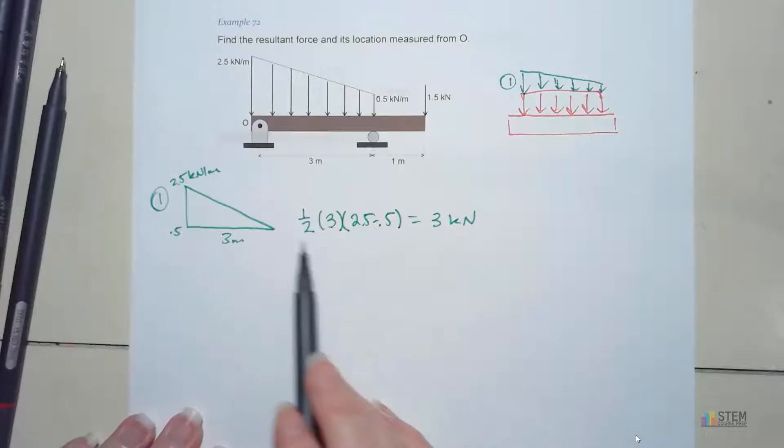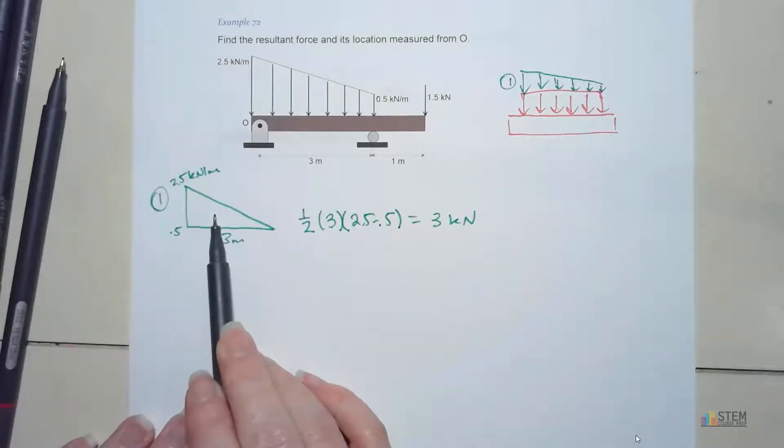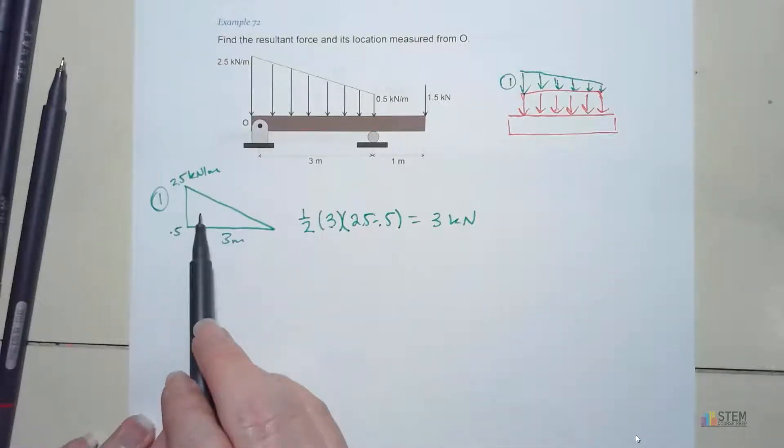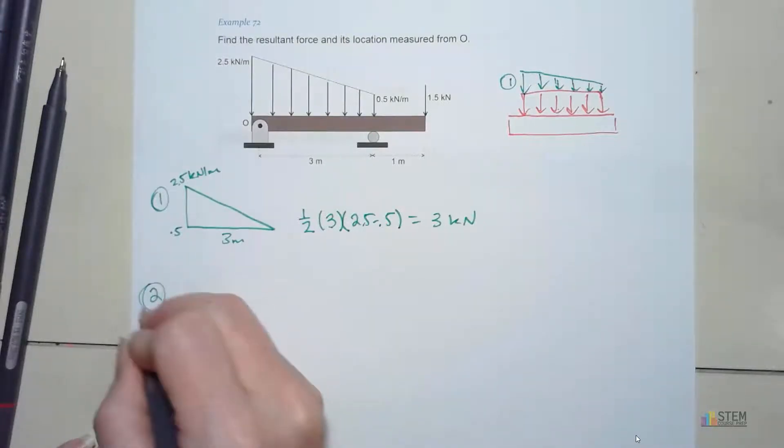So this is basically the resultant force of just this triangle right here. And remember, the resultant force is going to act at the centroid of your area. Okay, so we need to figure out where that's going to be. And we'll go back to that in just a second when we get to our moment equation.